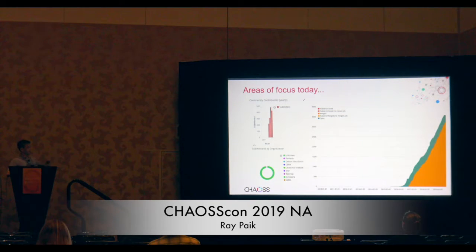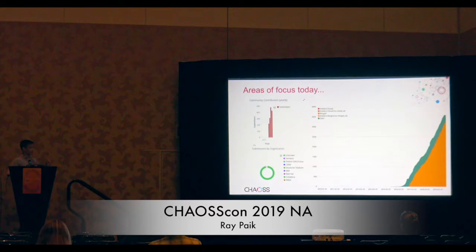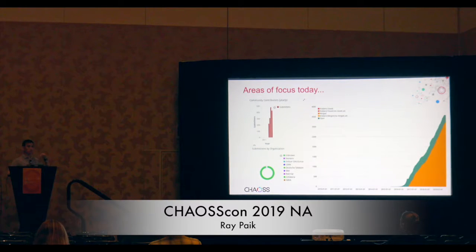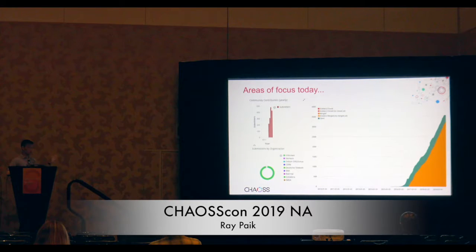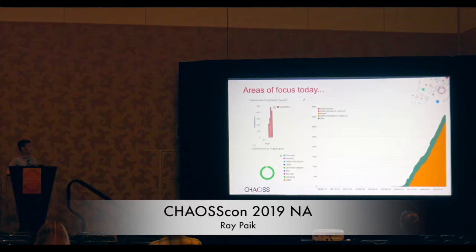The other thing I started looking at recently is a pie chart of contributions by organization. I'm seeing organizations like Siemens and CERN. One of the cool things is that a lot of our customers with a sizable internal deployment of GitLab — like CERN and Siemens — find it much easier to submit a merge request to fix a bug or add a new feature versus filing an issue and waiting for somebody to pick it up. I want to definitely recognize those contributions and those people, and I'm starting to look at different organizations contributing to GitLab.